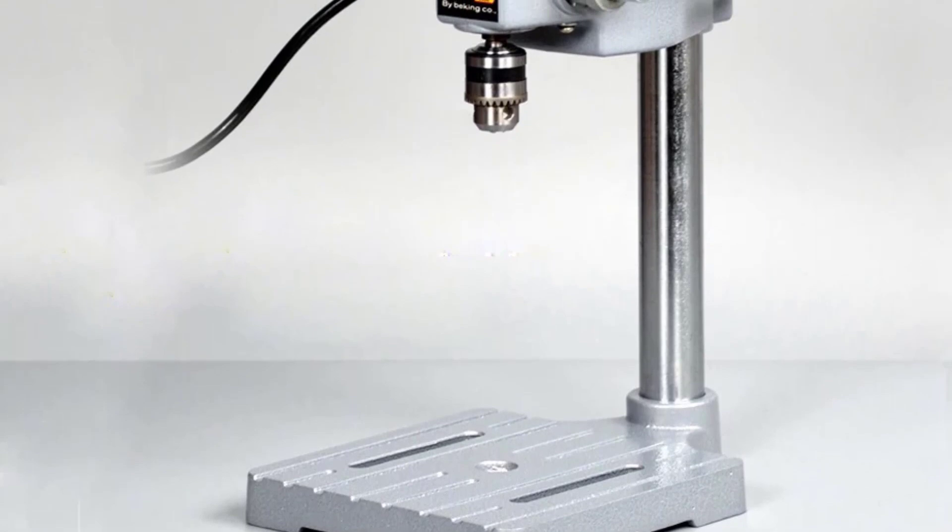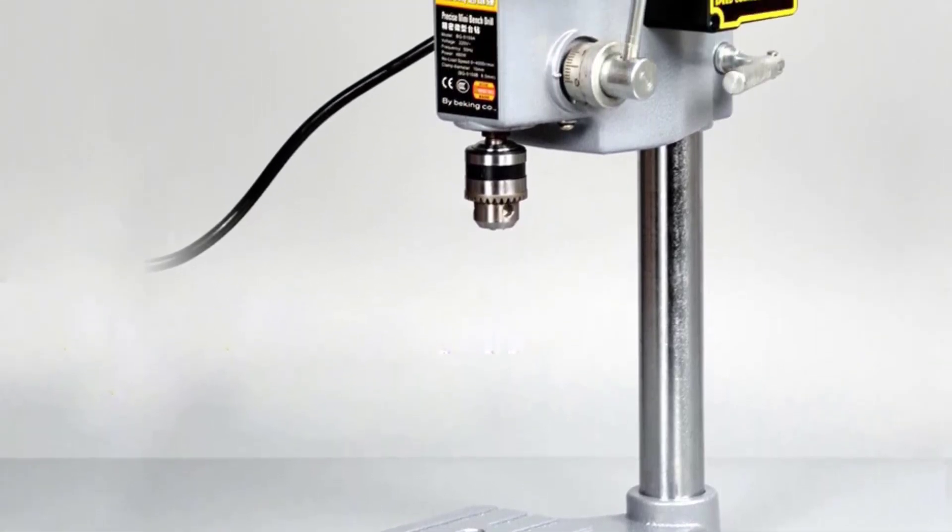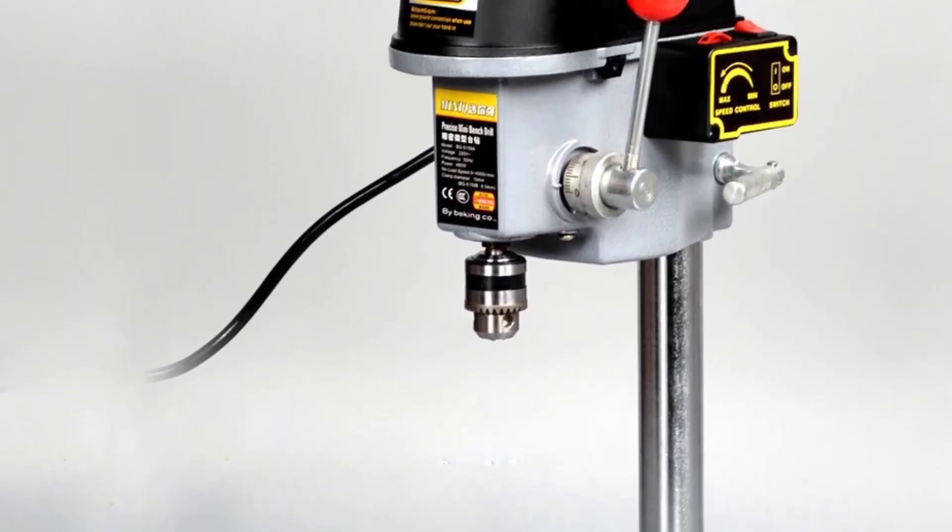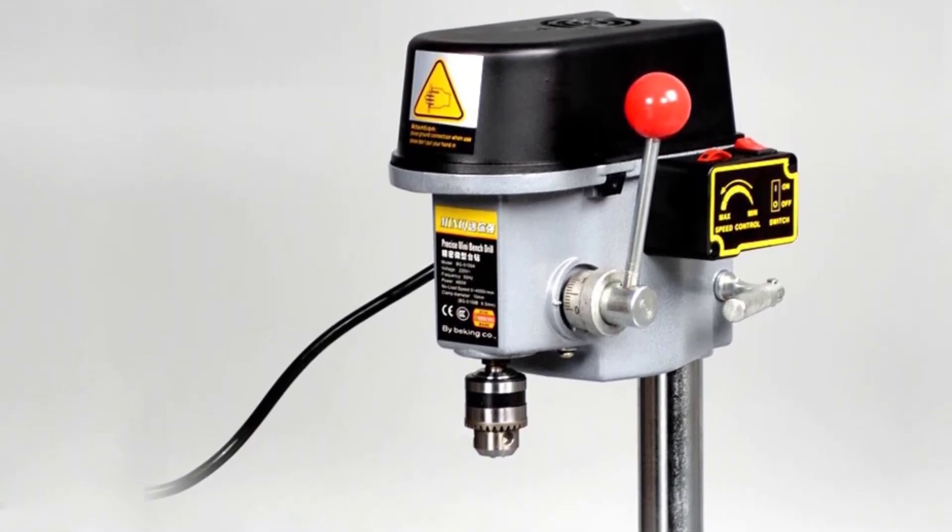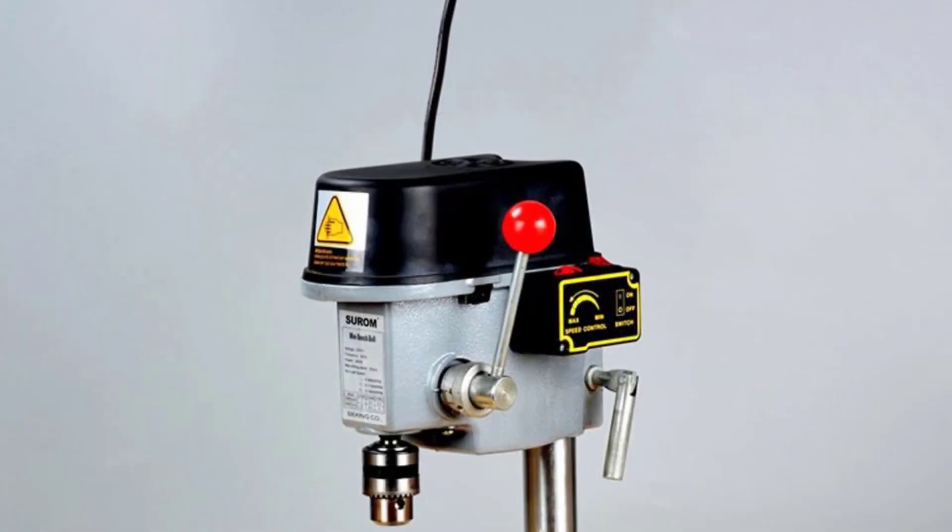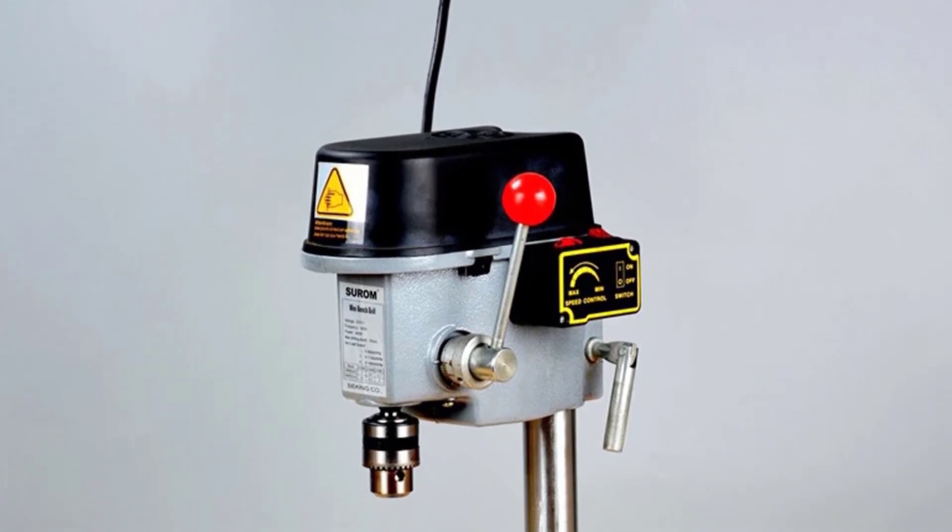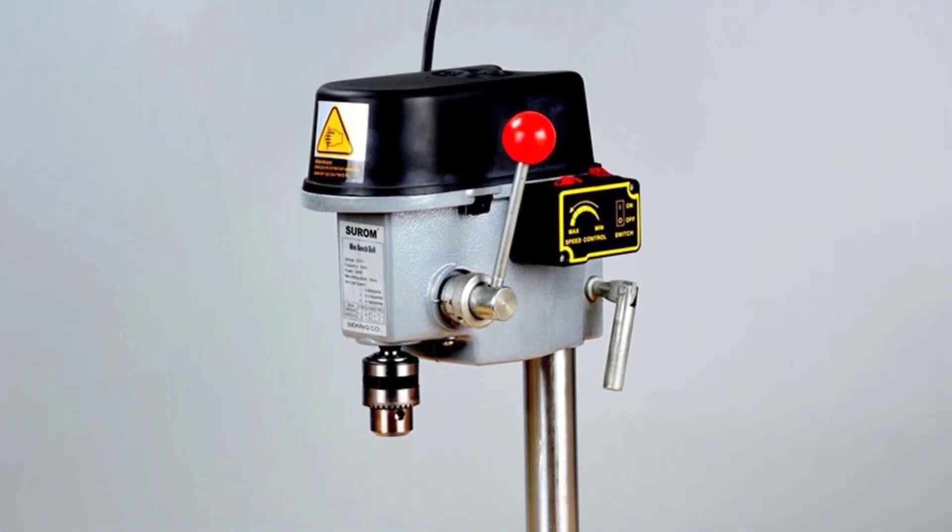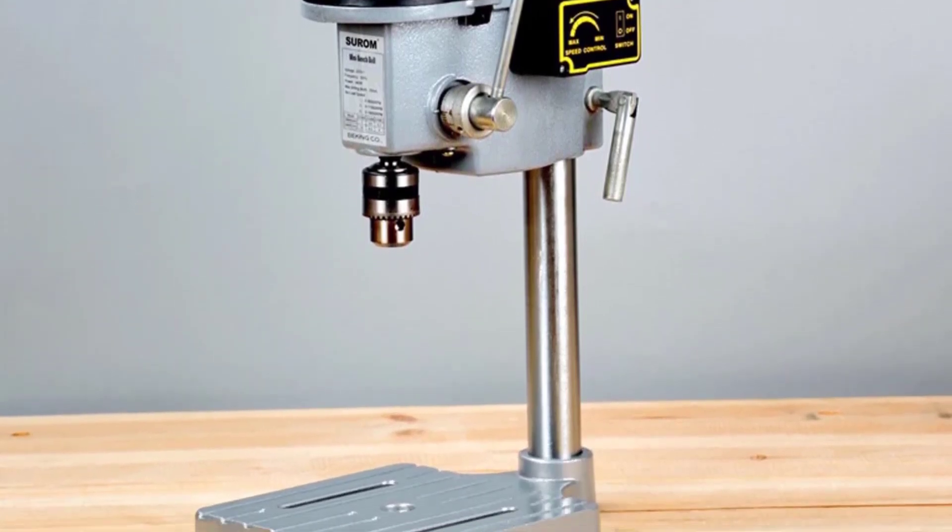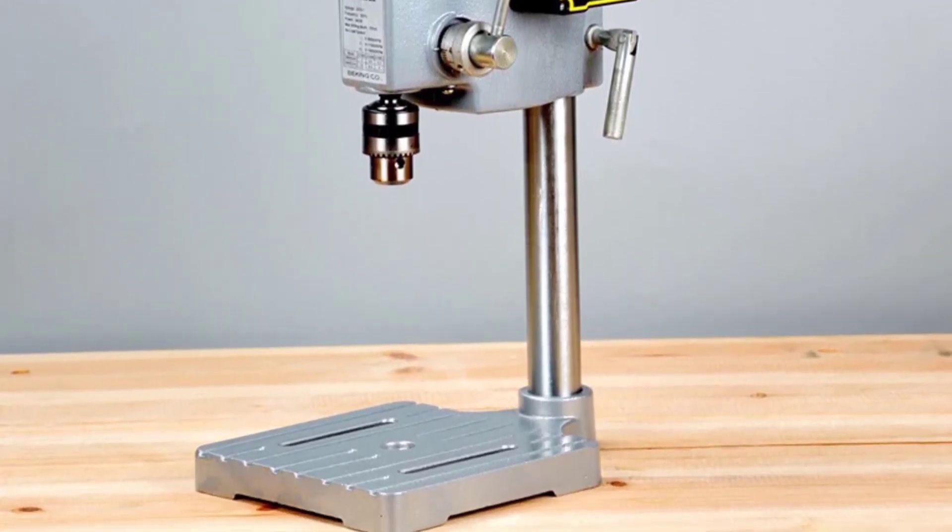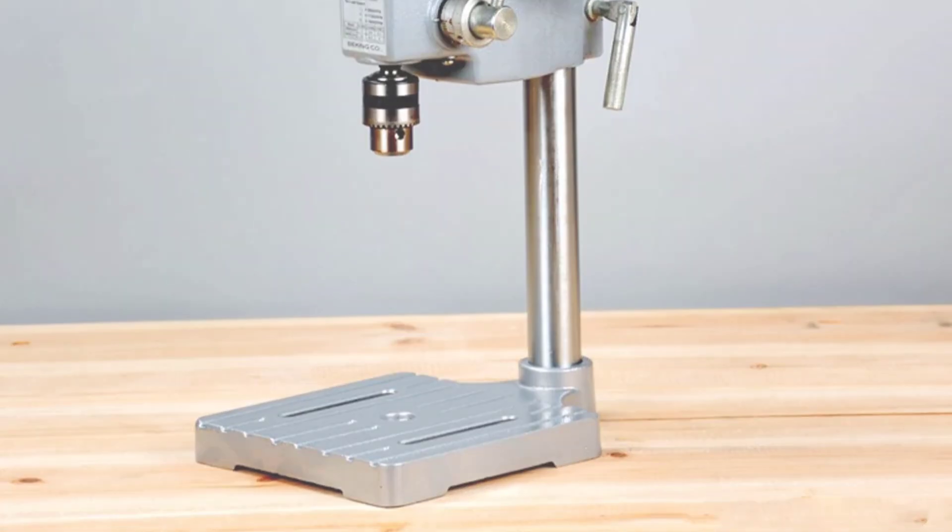One of the standout features is the precise control it offers. The adjustable clamp diameter ranging from 0.1 to 1cm ensures a secure grip on various drill bits. The downfeed travel of 4cm and a max stroke of 2.5cm allow for accurate drilling depths, providing the precision needed for intricate projects. Thanks for watching and subscribe this channel for more product videos.